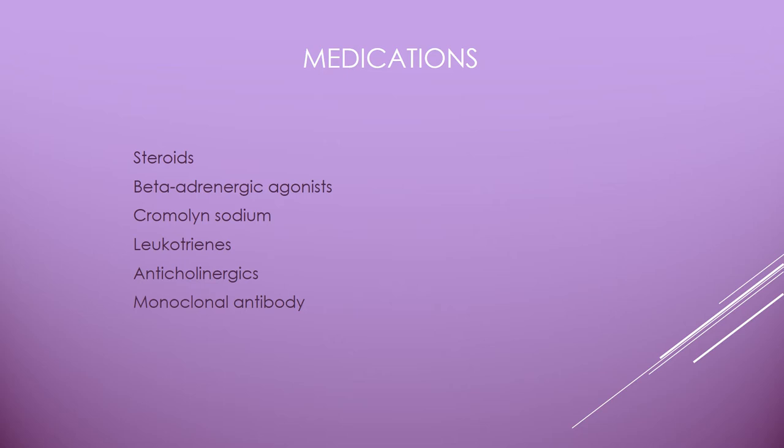Theophylline used to be given a lot but now is mostly used in the ER when a child isn't responding to other therapies. Leukotrienes — drugs like Accolate or Singulair — block inflammatory and bronchospasm effects. These are good for long-term control but are not fast-acting rescue meds. Anticholinergics like atrovent and atropine provide acute relief of bronchospasm but must be used carefully because they can cause blurred vision, dry up respiratory secretions, and cause cardiac and CNS stimulation.